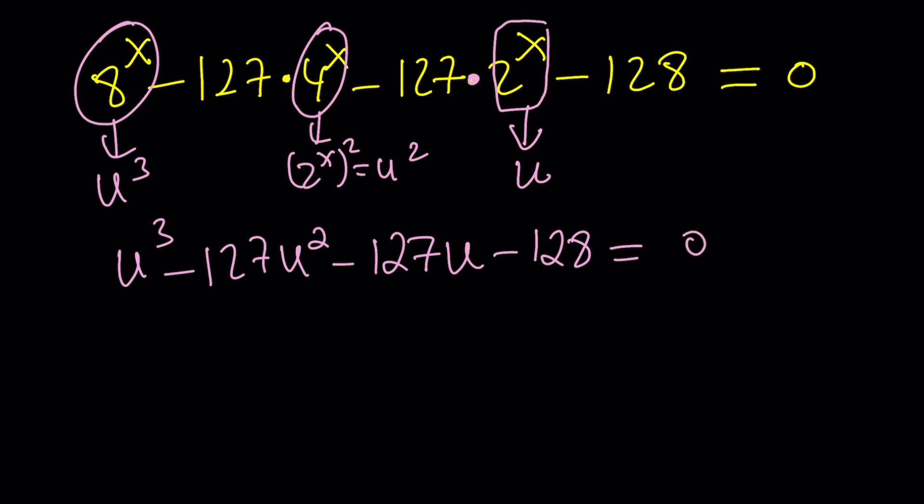So we get u^3 - 127u^2 - 127u - 128 = 0. Do you think we can solve this cubic? I mean, absolutely, you can solve any cubic, right? Well, pretty much. If you use the cubic formula, what's the cubic formula? Well, you got rid of the quadratic term, which is u^2 in this case. So u substitution, u use substitution.